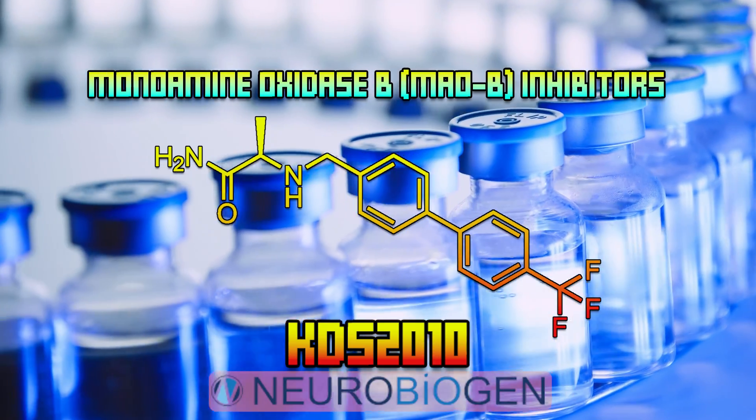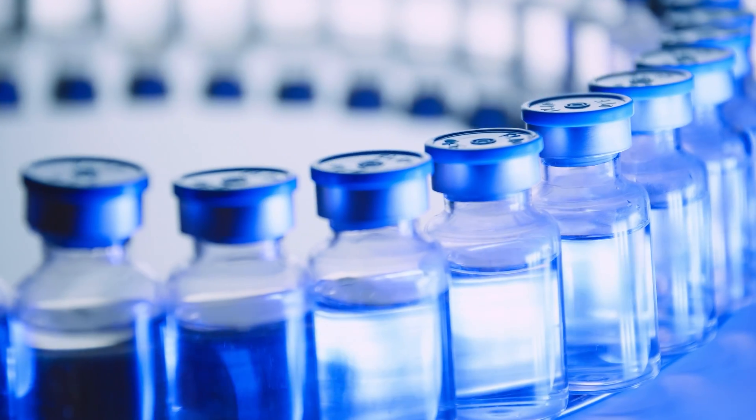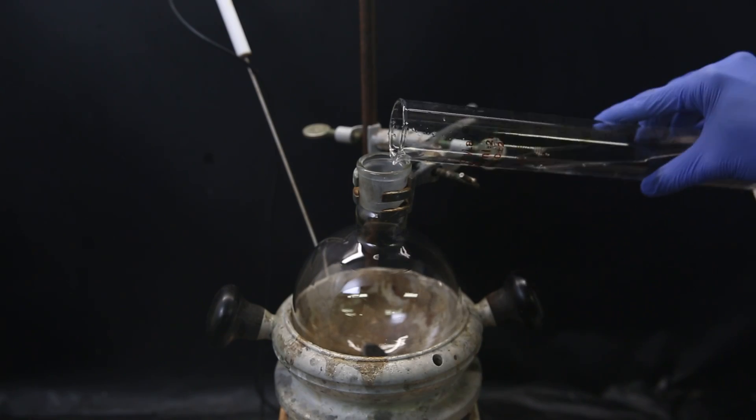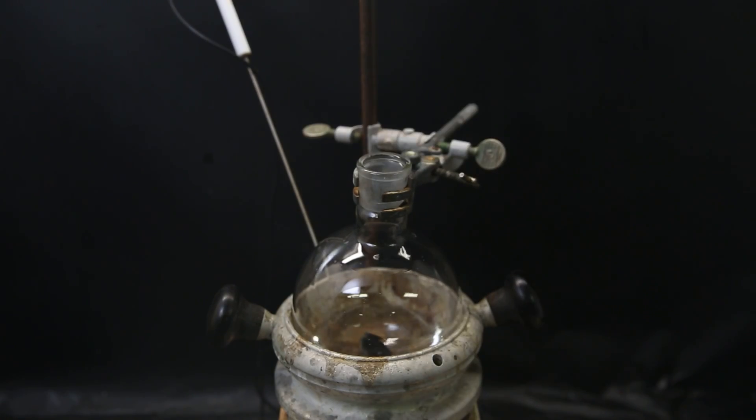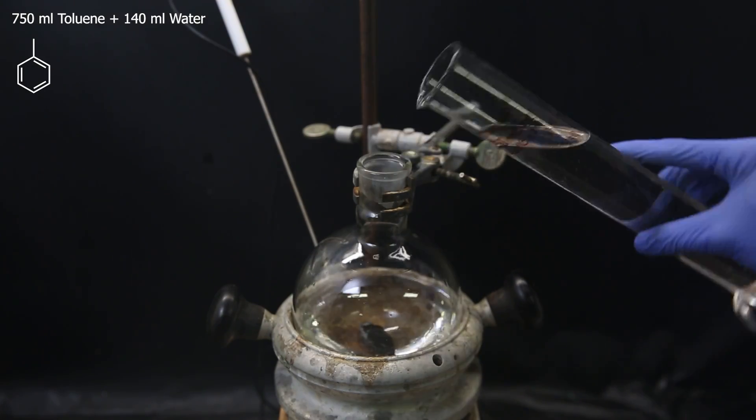So let's just see how it is made, directly stolen from the inventors, with a little tweaking. So to get started, I set up a large flask in a heating mantle and mix 750 ml of toluene with 140 ml of water.